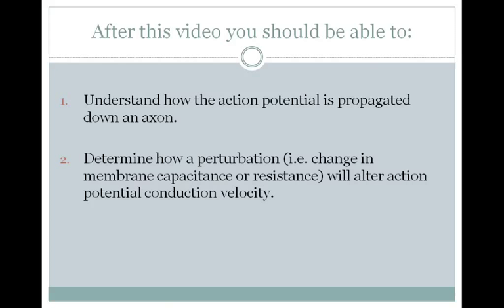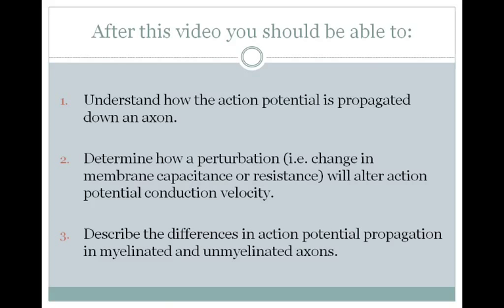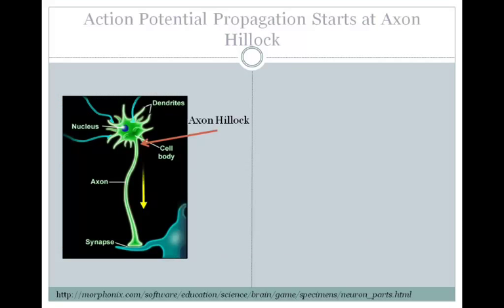Second, you should be able to determine how a perturbation, like a change in membrane capacitance or resistance, will alter action potential conduction velocity. And finally, you should be able to describe the differences in action potential propagation in myelinated and unmyelinated axons.